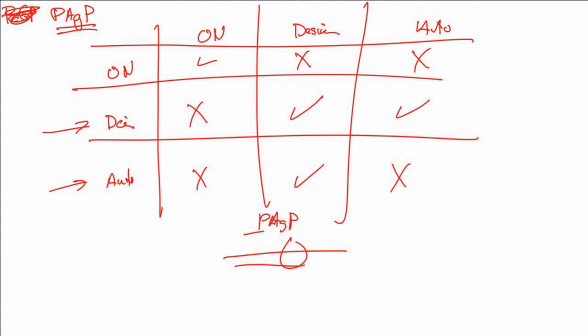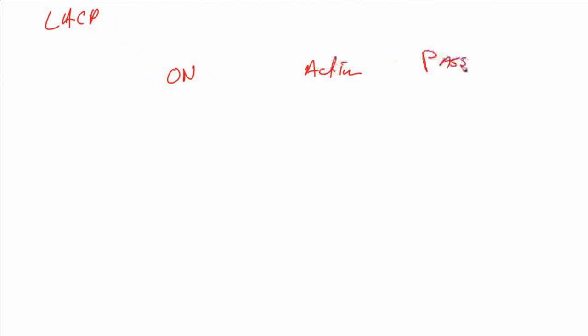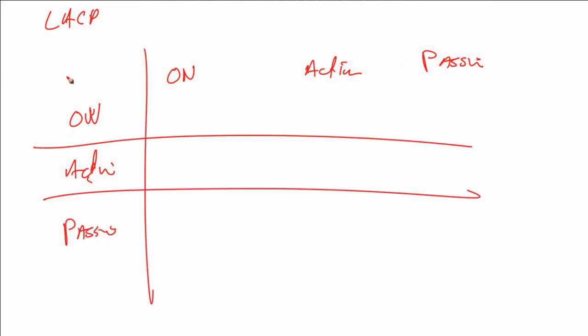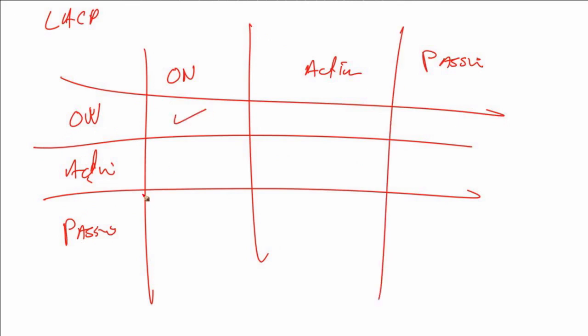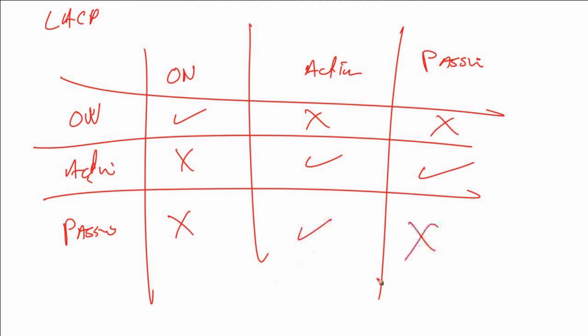For LACP, the modes are: 'on', 'active', and 'passive'. Building the table: on/on gives us a link. On/active gives no link. On/passive gives no link. Active/on gives no link. Active/active gives a link. Active/passive gives a link. Passive/on gives no link. Passive/active gives a link. Passive/passive gives no link. Active means initiating, passive means willing to participate if someone else initiates. The outcome is the same regardless of which protocol we use for how our devices interconnect via EtherChannel.